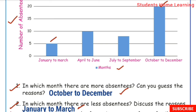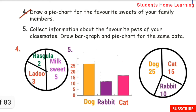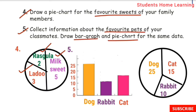Fourth one: draw a pie chart for the favorite sweets of your family members. Fifth one: draw a bar graph and pie chart for the favorite pets of your classmates. For example, out of 50 students — 25 members prefer dog, 10 members prefer rabbit, and 15 members prefer cat.